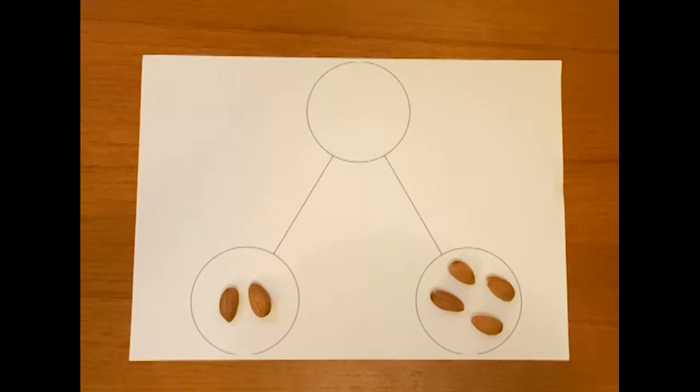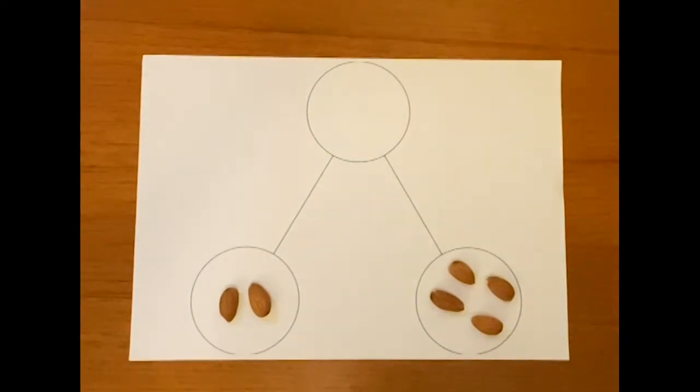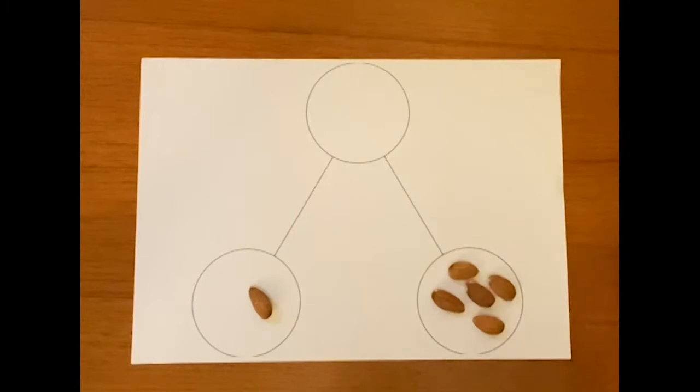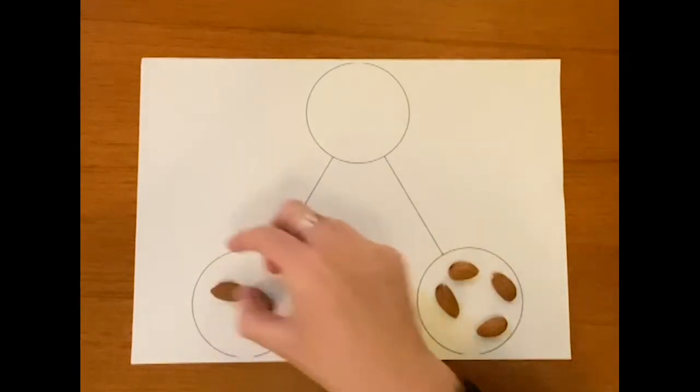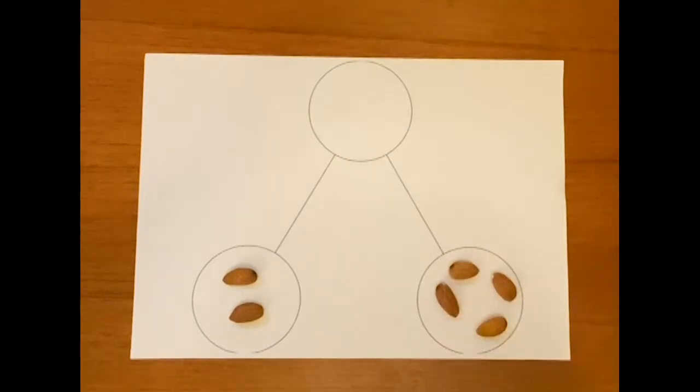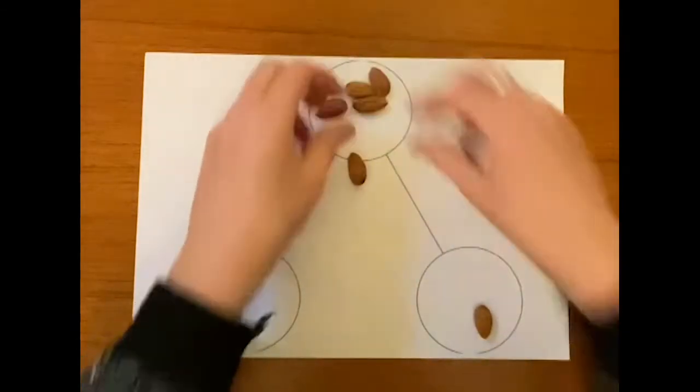How many does that make all together? You're right. It's still six, isn't it? We did have one nut over here and five nuts over here. But now we've got two nuts over here and four nuts over here. So two, add four, still makes six, doesn't it?